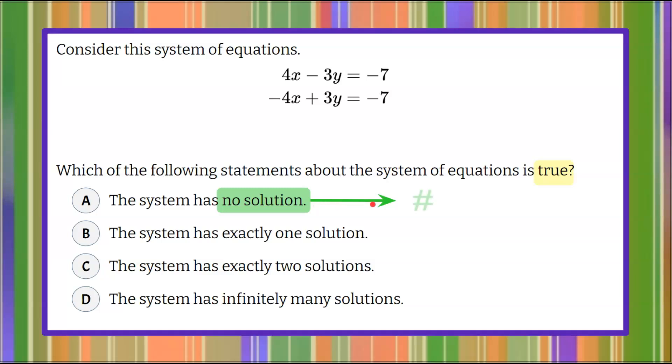If the system has no solution, then we're going to have a numerical value that does not equal another numerical value. So the x variable and the y variable will be eliminated when we solve the system, and we'll have a false numerical statement.